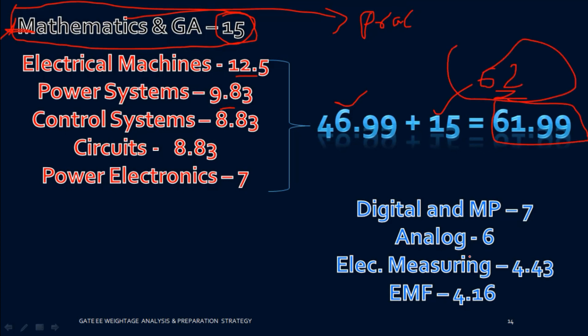If you score around 62 marks by properly managing time in the last one to one and a half months — focusing on these five technical subjects plus Mathematics and General Aptitude — you can expect a rank below 300 to 400. Managing these six parts well: Mathematics, Machines, Power Systems, Control Systems, Circuits, and Power Electronics gives you a very competitive rank.